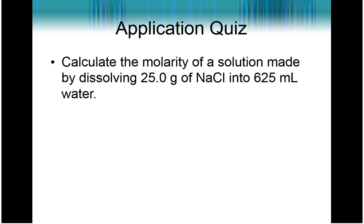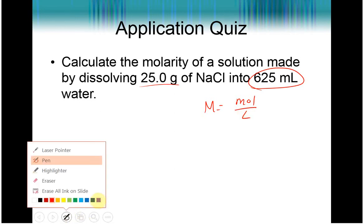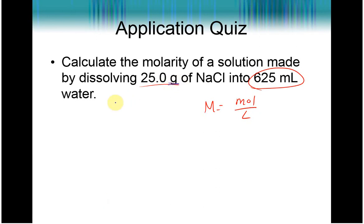Now let's go back to the molarity unit for a second. Calculate the molarity of a solution made by dissolving 25 grams of NaCl and diluting it to 625 milliliters of solution. Here, because molarity is moles per liter, we need both moles and liters. We actually don't have either of those values. So to get to moles, we're going to go from grams to moles using the molar mass of NaCl and we're going to go from milliliters to liters using a conversion we did in unit one.